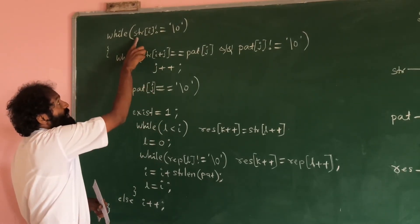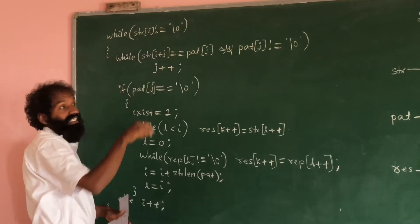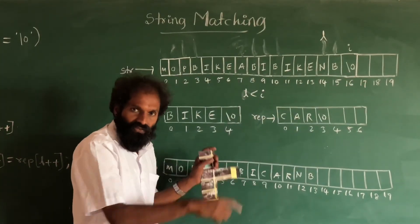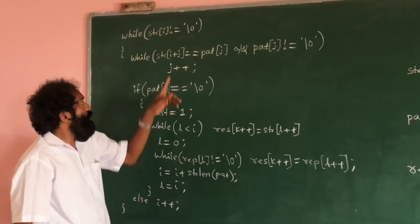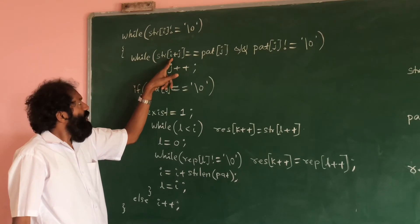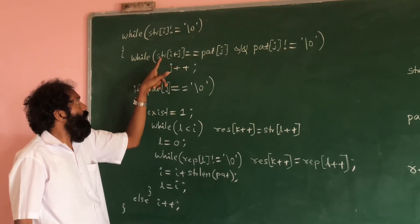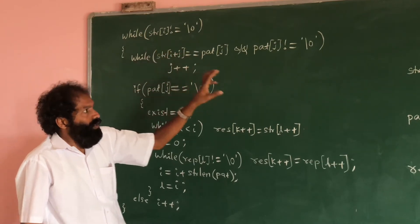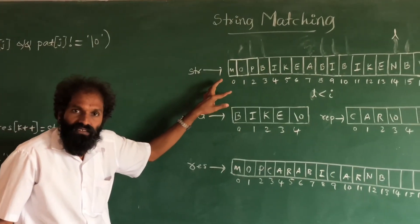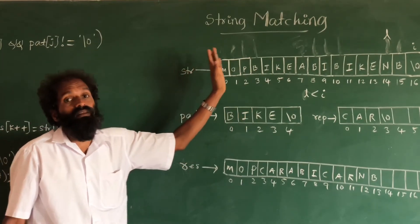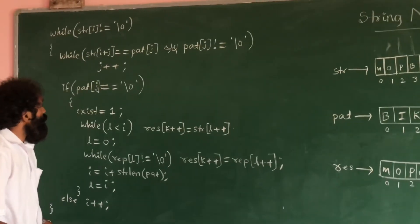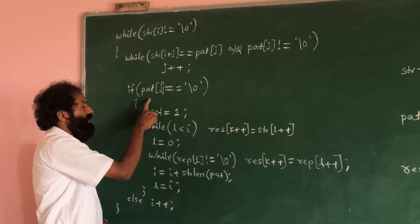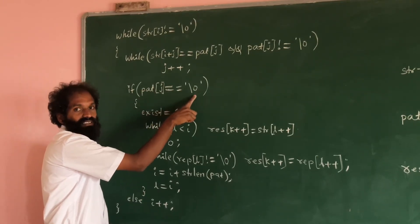Now I will explain the code. The condition is: while str[i] is not equal to null character — we have to compare all characters until we encounter the null character. In the beginning, i value is zero, j value is zero. We compare str[i] with pat[j] — if it is same we check next character, if different we increment i. We keep doing this same thing.